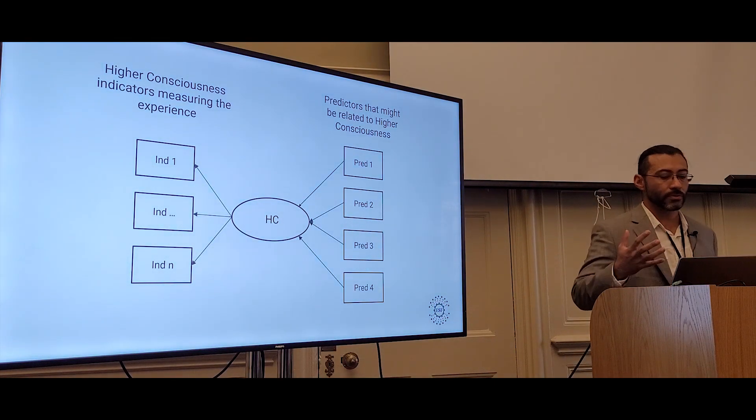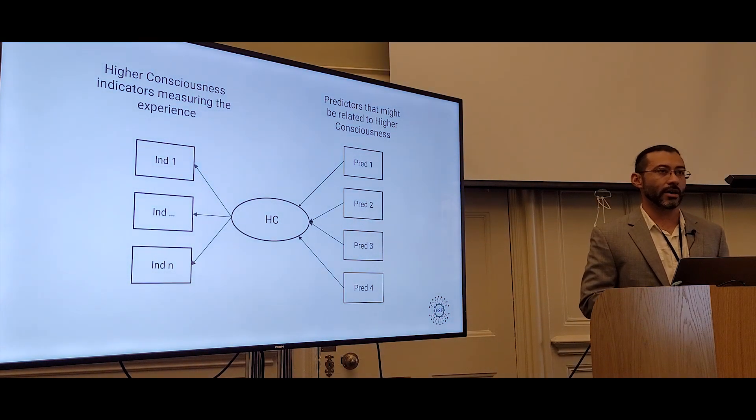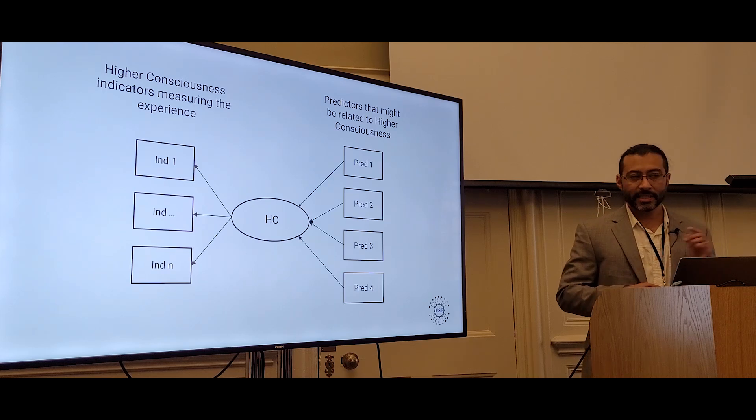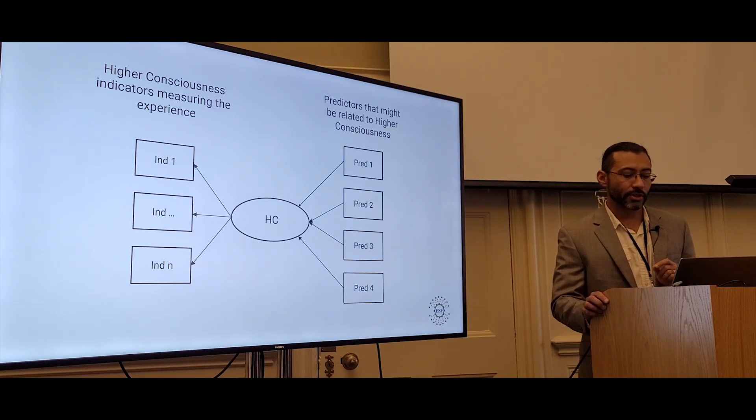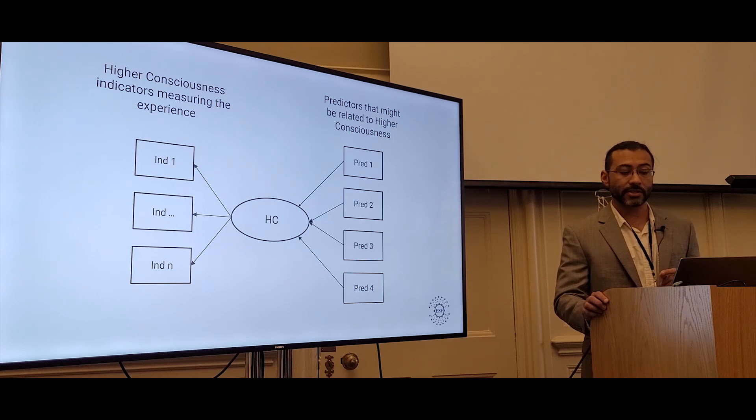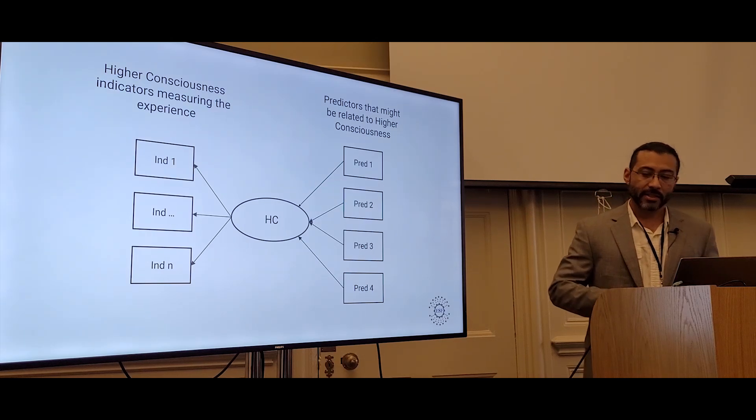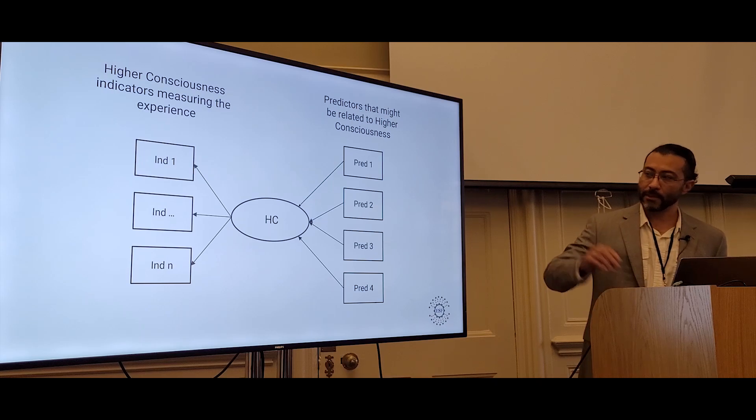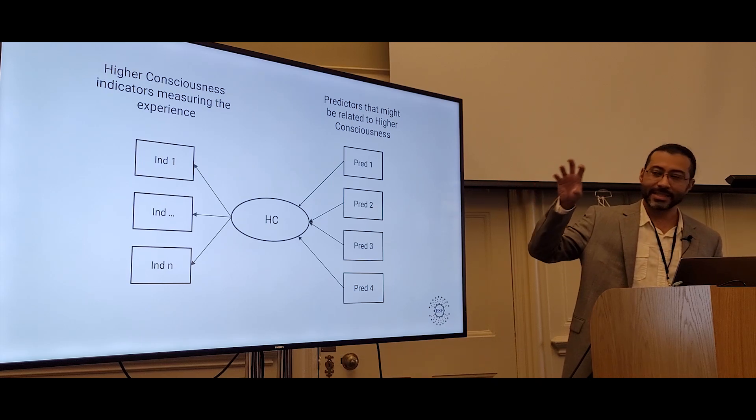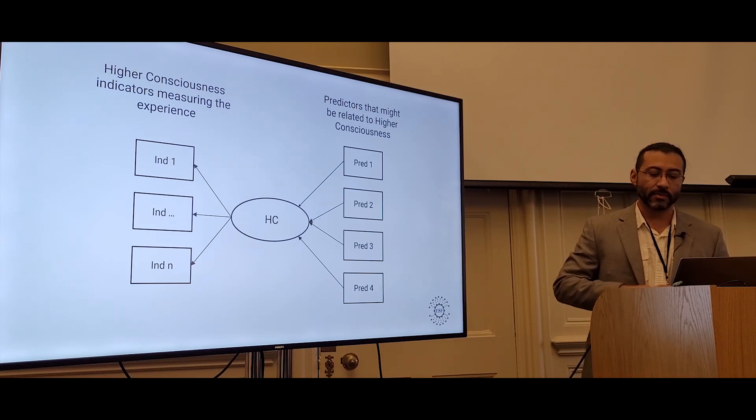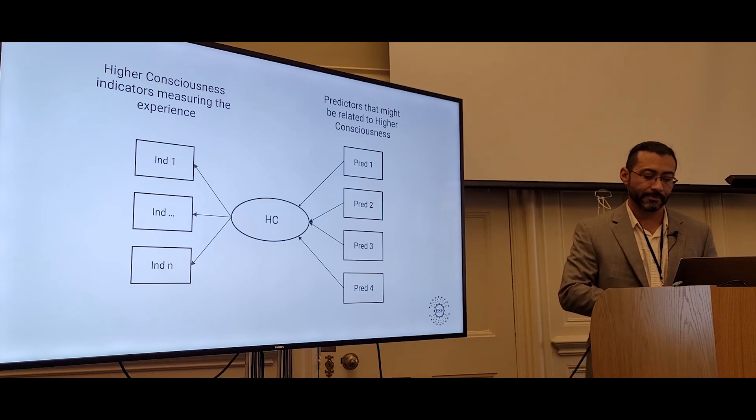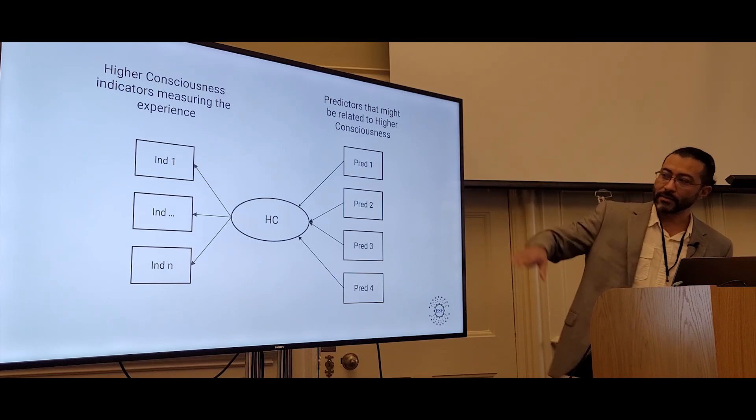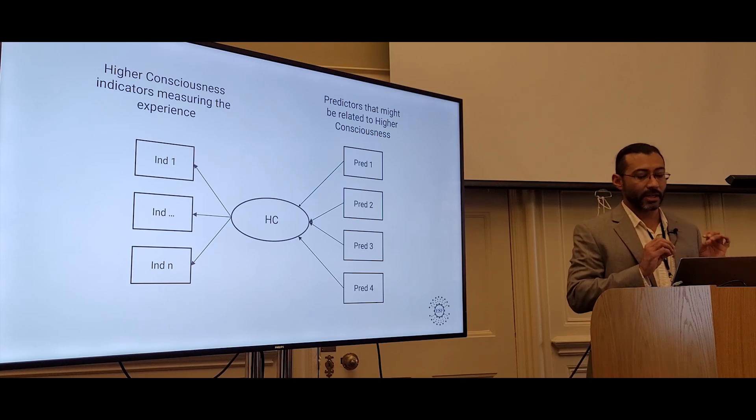So let's talk about how we can use our new HC-18 higher consciousness scale. Well, since the scale's been psychometrically validated, we can use structural equation modeling to discover predictors of the experience. The boxes on the left represent the indicators or survey questions of higher consciousness. The oval in the middle represents the experience of higher consciousness, something we can't measure directly, but can measure indirectly through its indicators.